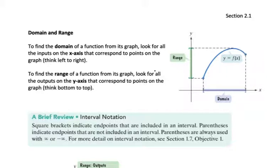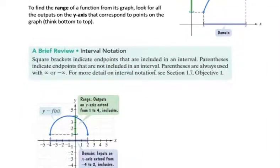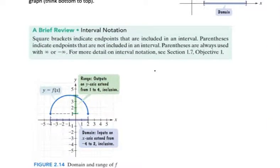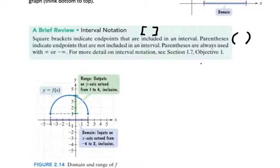When we're writing domain and range in the homework, we're going to put them into interval notation. Interval notation uses square brackets to indicate endpoints that are included. Parentheses are used to indicate that the endpoints are not included. We always use parentheses if we have infinity or negative infinity — you would never have a square bracket next to infinity. You can see more detail on interval notation in the textbook.